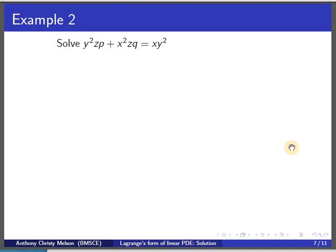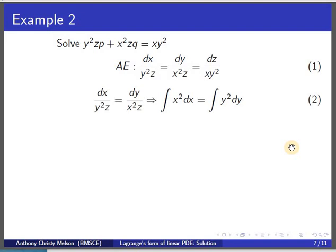For the next problem: y²z·p plus x²z·q equal to xy², the auxiliary equation is dx/(y²z) equal to dy/(x²z) equal to dz/(xy²). We choose dx/(y²z) equal to dy/(x²z) as the first pair. Eliminating z and separating the variables, we integrate to get u equal to x³ minus y³.